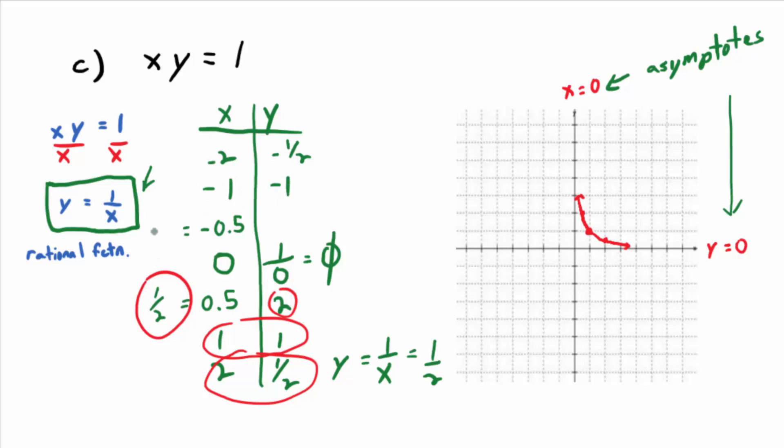What happens when we plug in negative 0.5, which is really negative one half? We flip it and get negative two. So we plot these points.